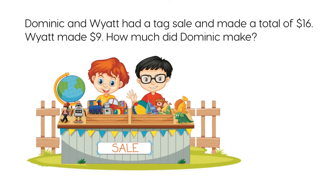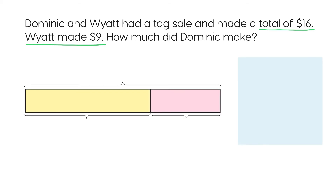Dominic and Wyatt had a tag sale and made a total of $16. Wyatt made $9. How much did Dominic make? We can use a bar model to help us visualize what we need to do. The yellow bar and the pink bar represent the total sales, so we write 16 here. The yellow bar is what Wyatt sold — $9.